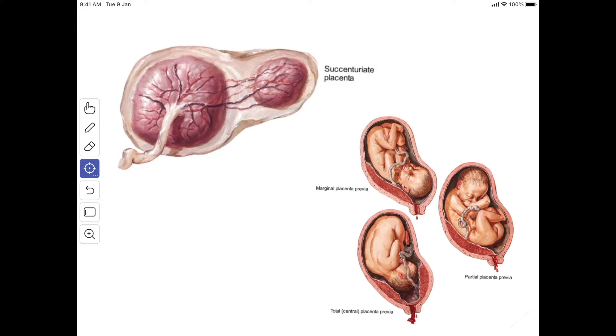According to the site of implantation, it is classified into placenta previa. This condition takes place when the blastocyst is implanted into the lower part of the uterine cavity overlapping the internal os of the cervix. This produces serious hemorrhage before parturition. The placenta previa may be central or marginal.